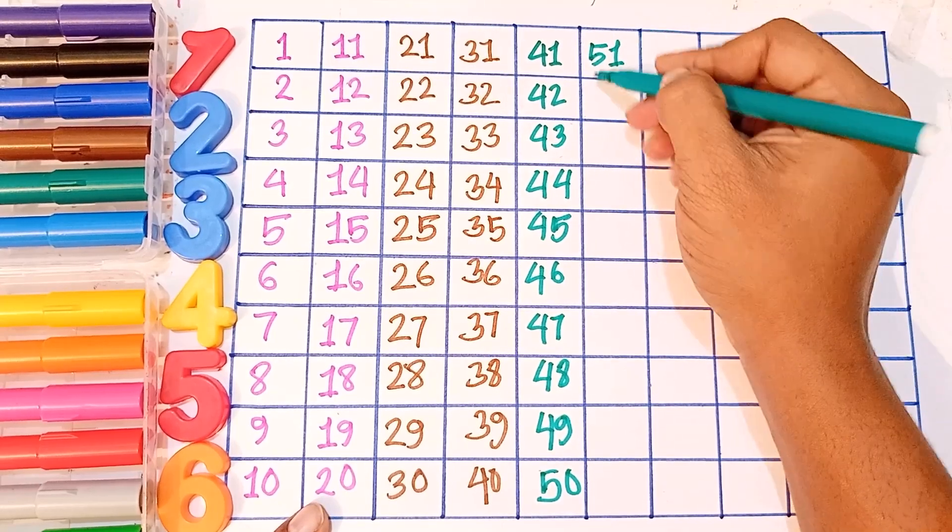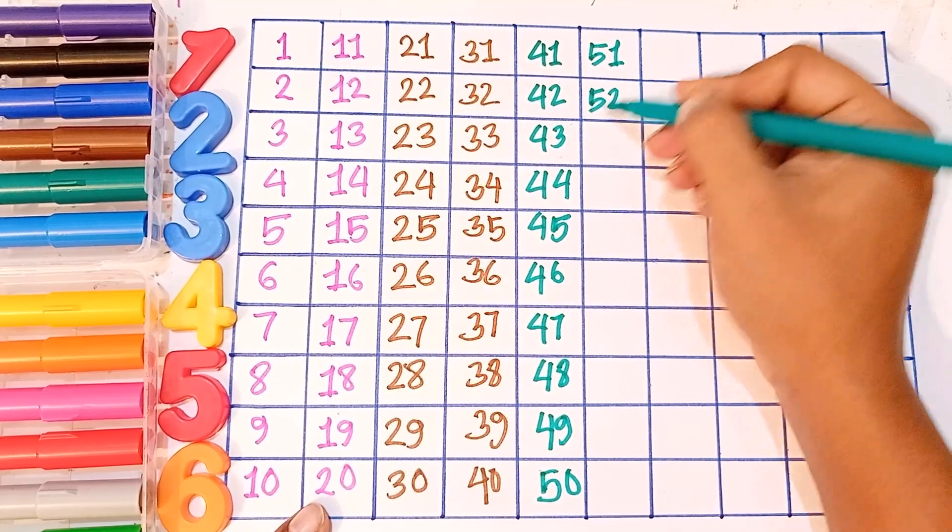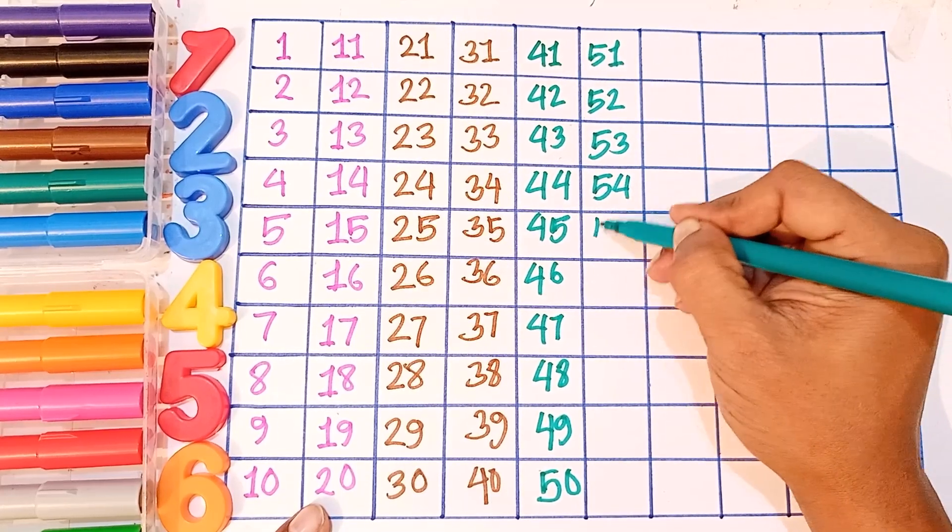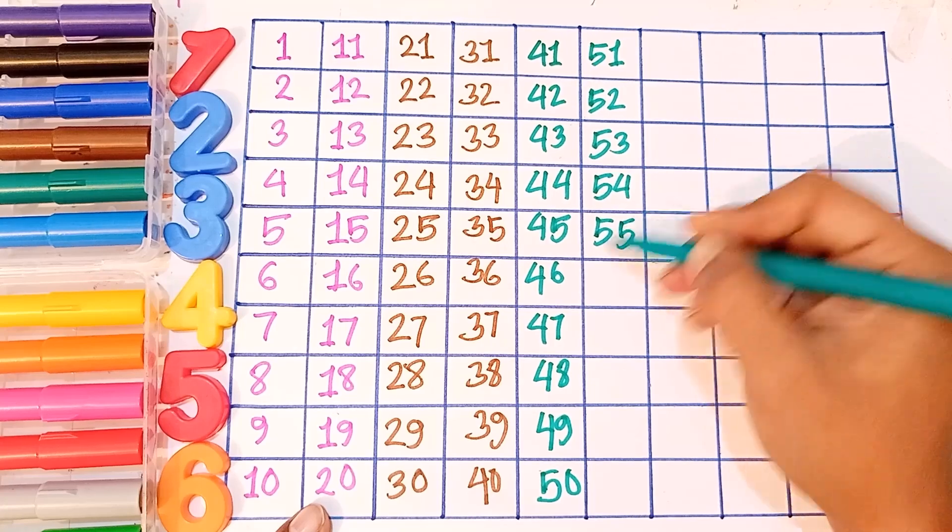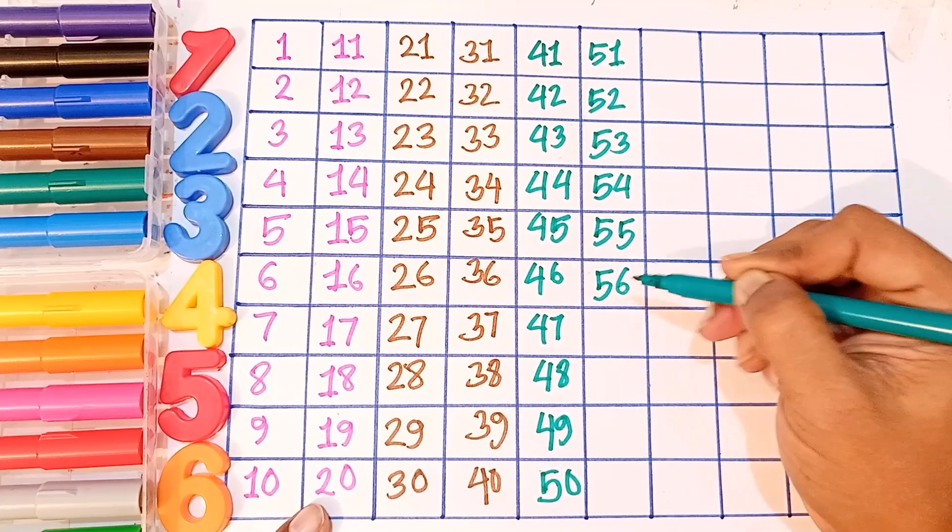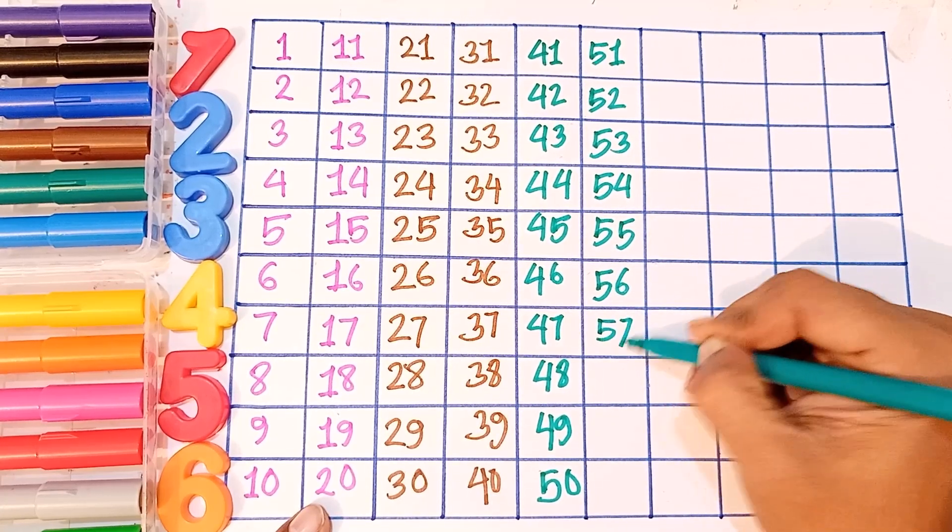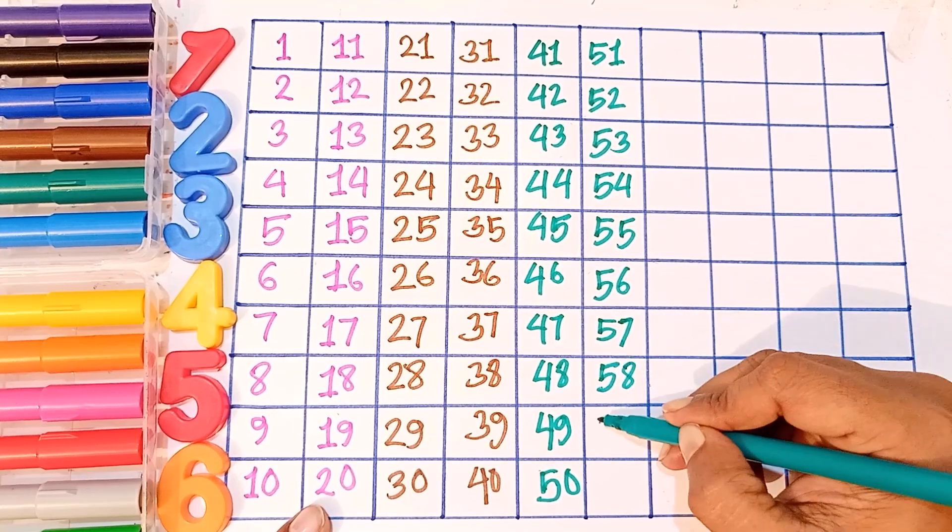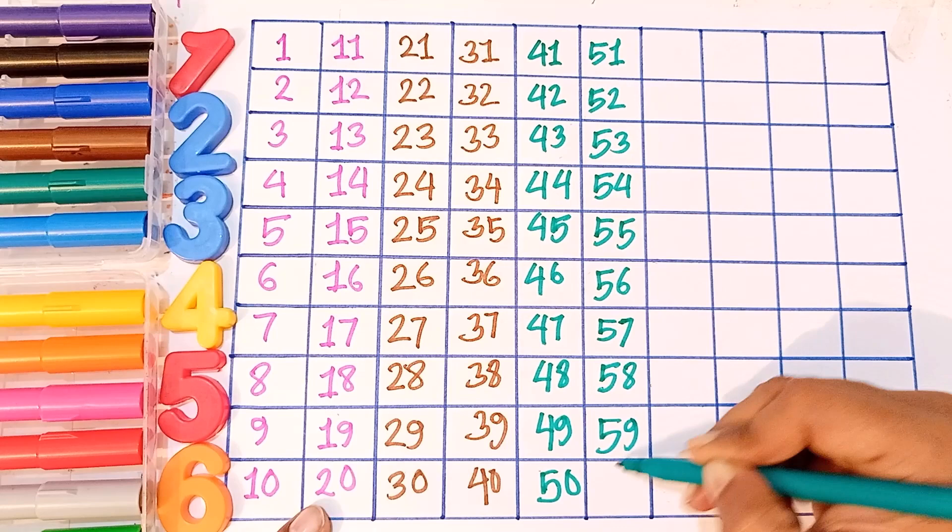Fifty-one, fifty-two, fifty-three, fifty-four, fifty-five, fifty-six, fifty-seven, fifty-eight, fifty-nine, sixty.